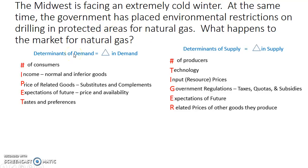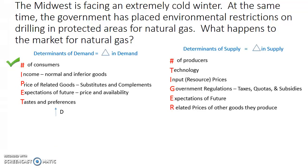So we look at the determinants of demand: number of consumers, income, price of related goods, future expectations, and taste and preferences. Because it's extremely cold and people are going to need gas to heat their homes, there's going to be a larger market demand for natural gas. The determinant here is the number of consumers, and this will increase demand.